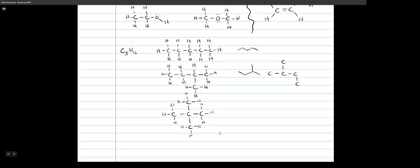These three structures all have different names and different properties. This one is called pentane, this one is called 2-methylbutane, and this one is called 2,2-dimethylpropane. We'll worry about naming in Chapter 4. The next formula up is C6H14, which has five isomers, and C7 has nine.